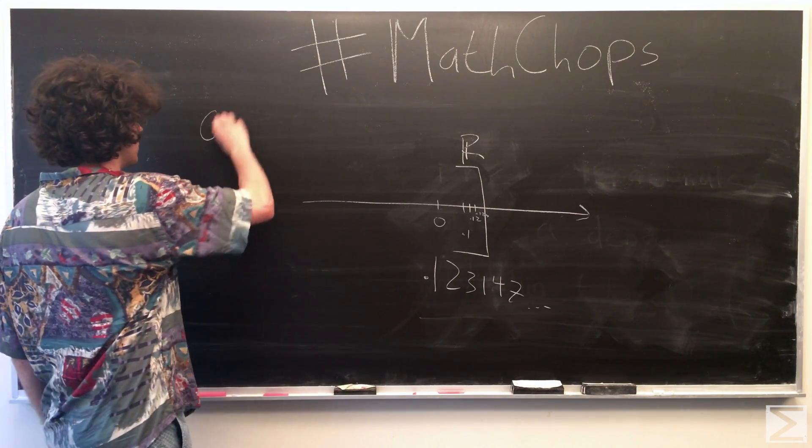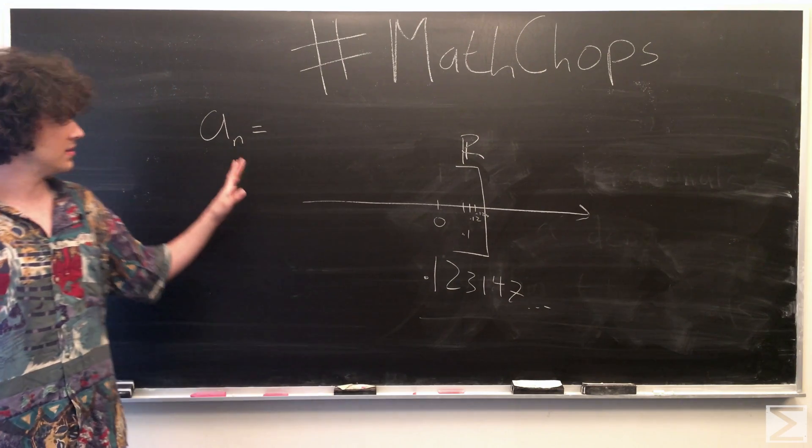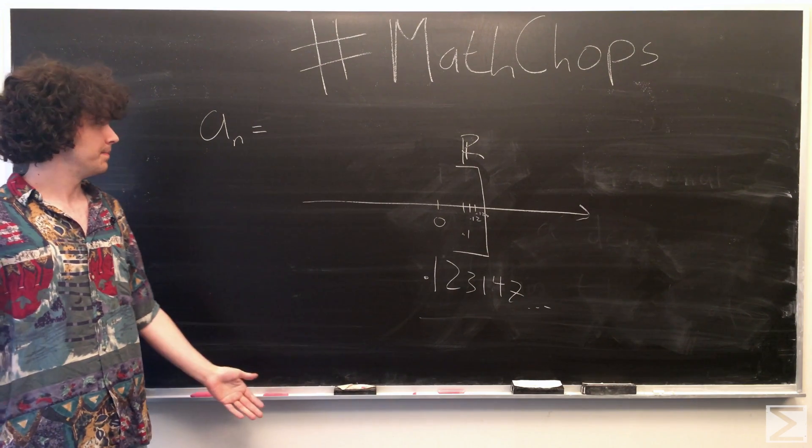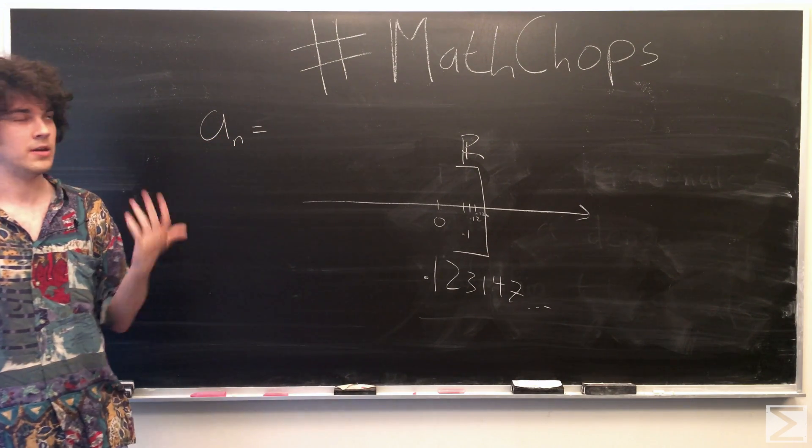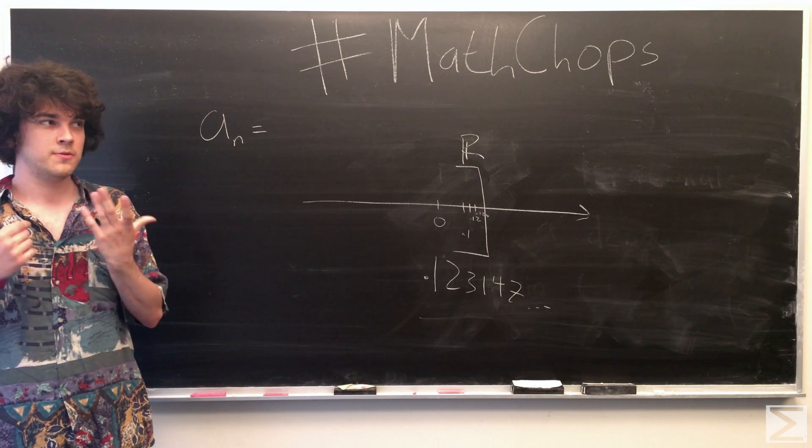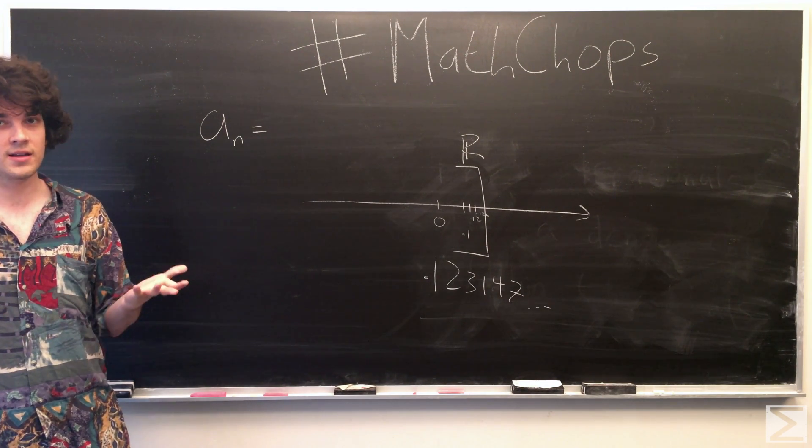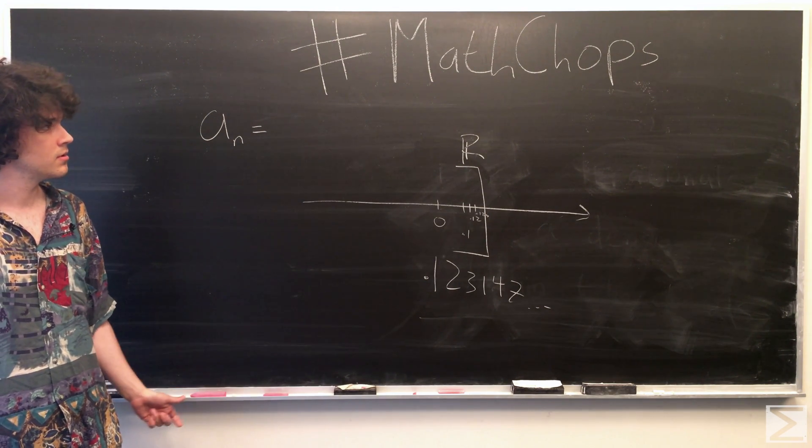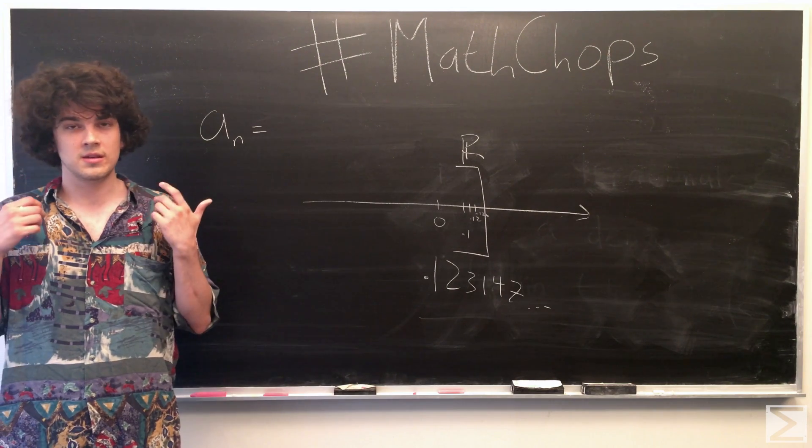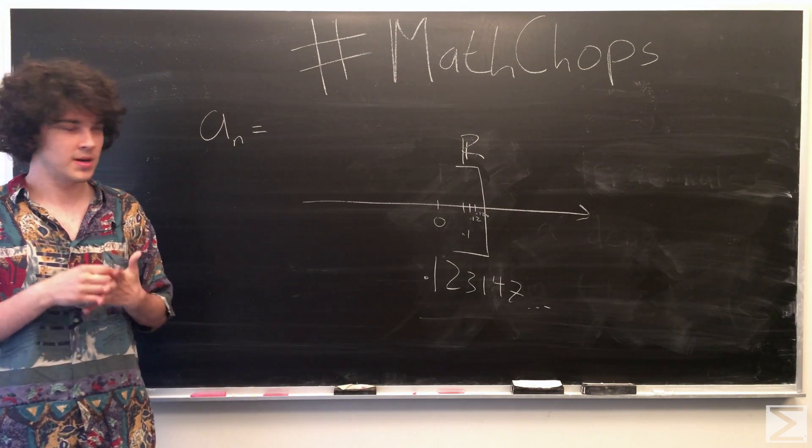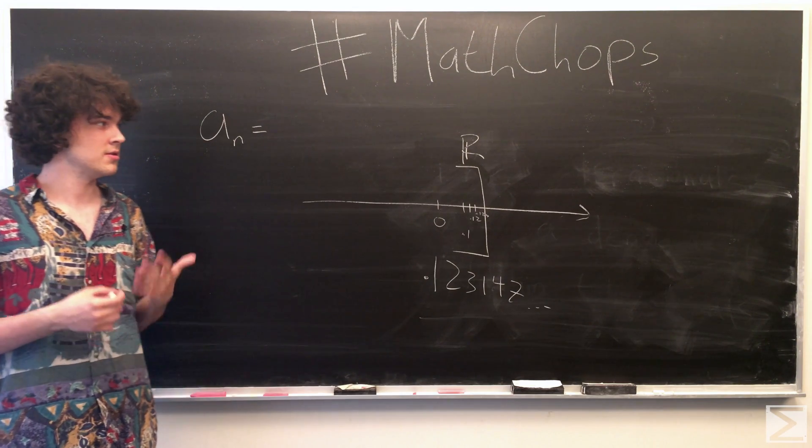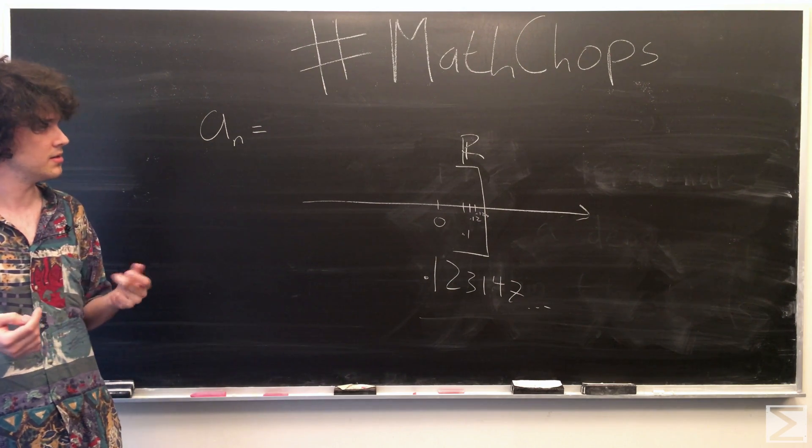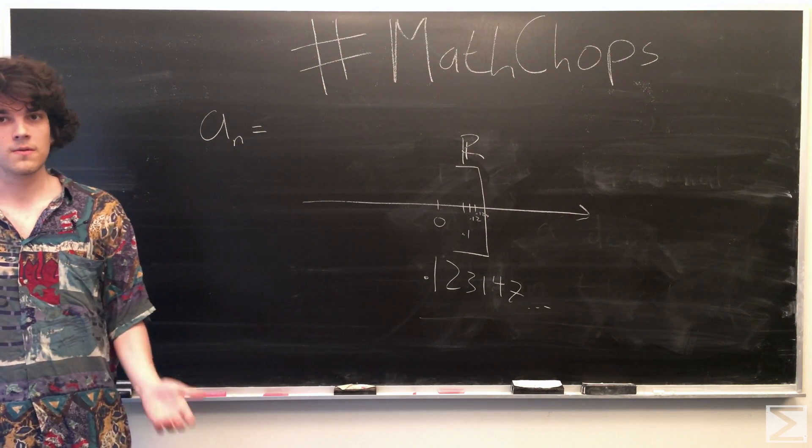And so we need aₙ to be a sequence of irrational numbers converging to a rational number. And we can, for now, just say that it converges to one and then multiply that later to get to any rational number. Because we construct the natural numbers with Peano's axioms, and then from there, we construct the integers, and then from there, the rationals as all these quotients of integers.